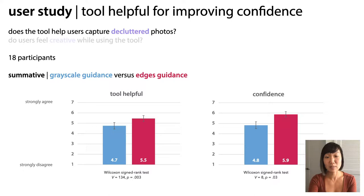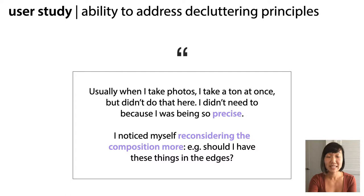However, participants did believe the tool was helpful for the task of capturing clear and decluttered images. It also made them more confident in their ability to address the decluttering principles of subject-background separation and image-border flicker. Participants described feeling like they could take fewer photos because they could be more confident in each photo they took: "Usually when I take photos, I take a ton at once, but I didn't do that here. I didn't need to because I was being so precise."